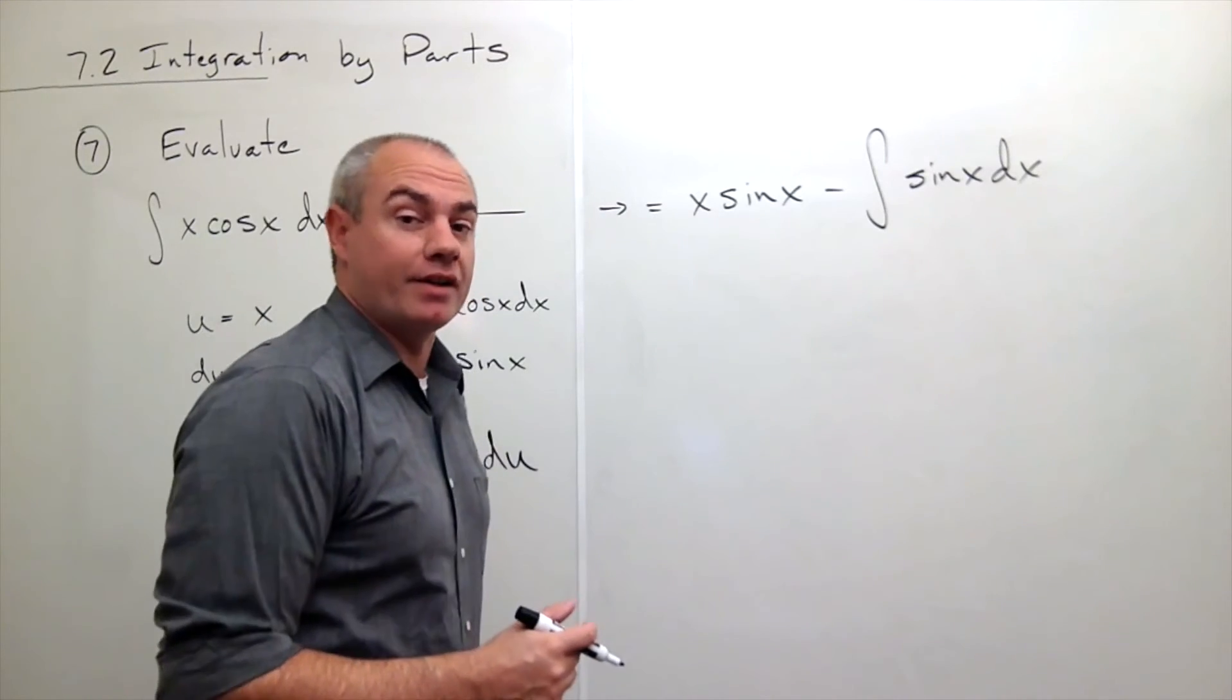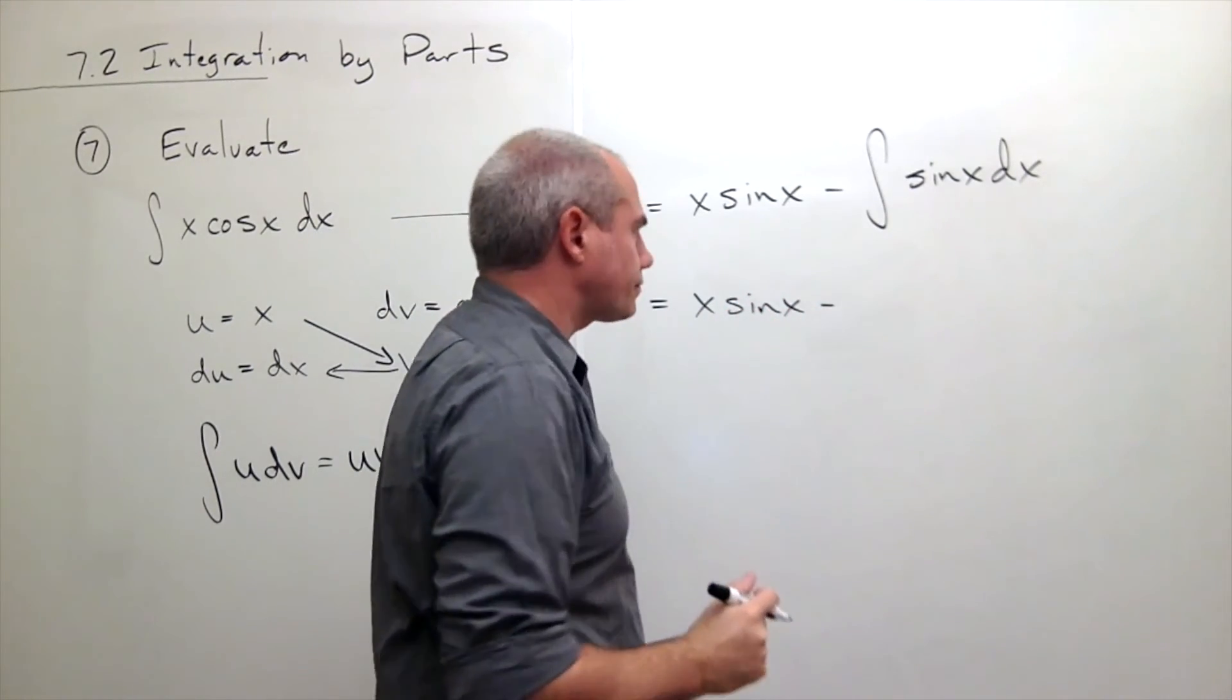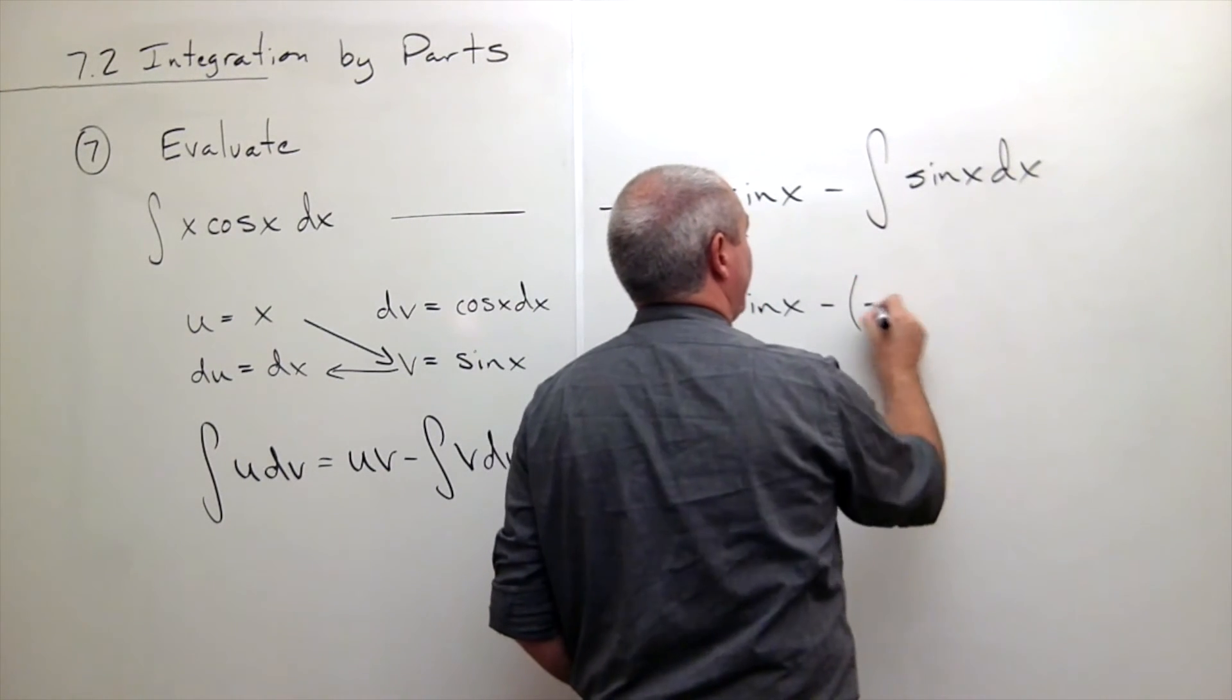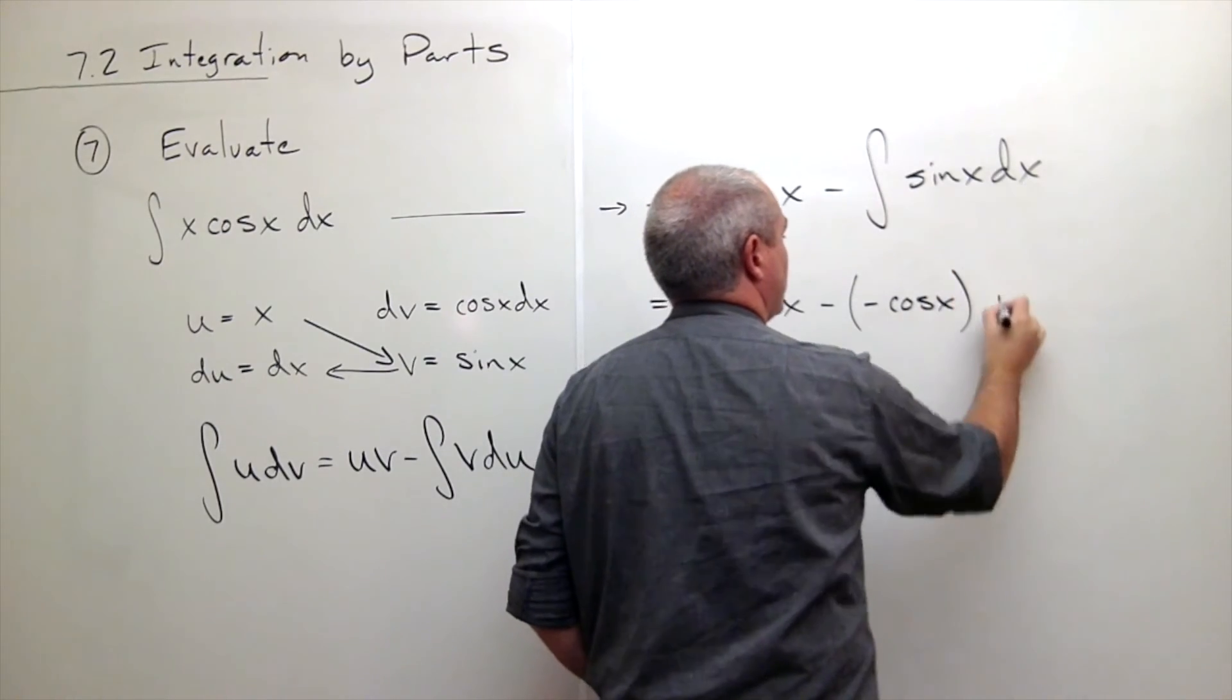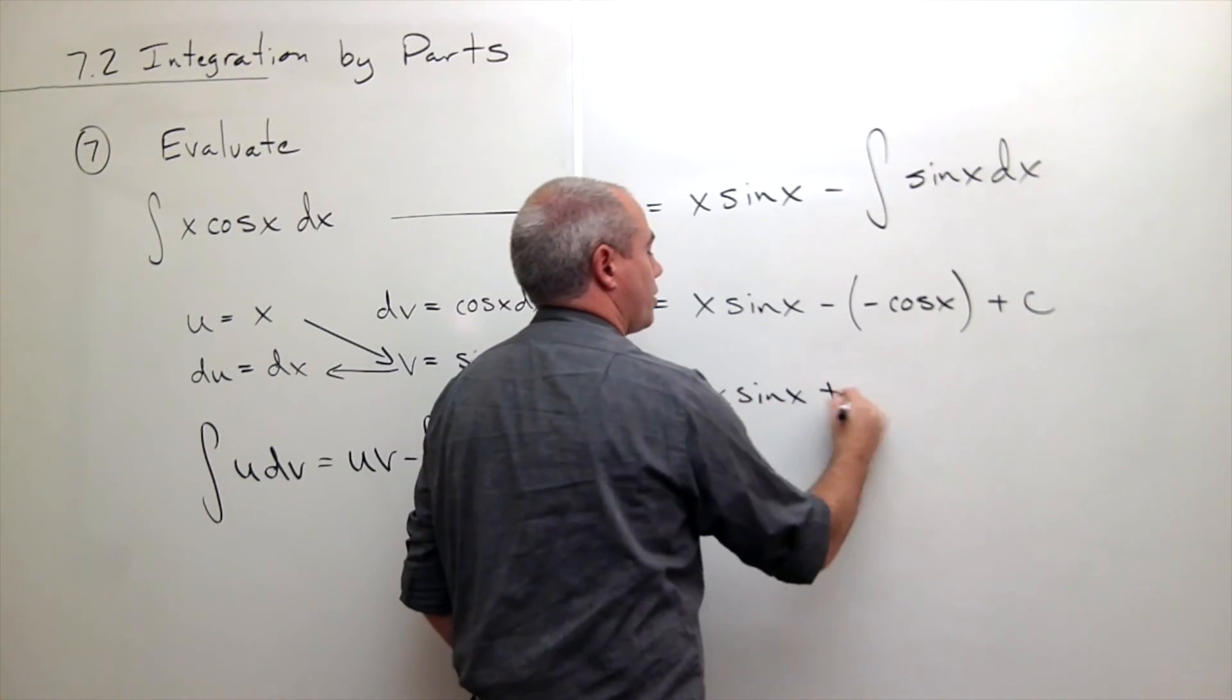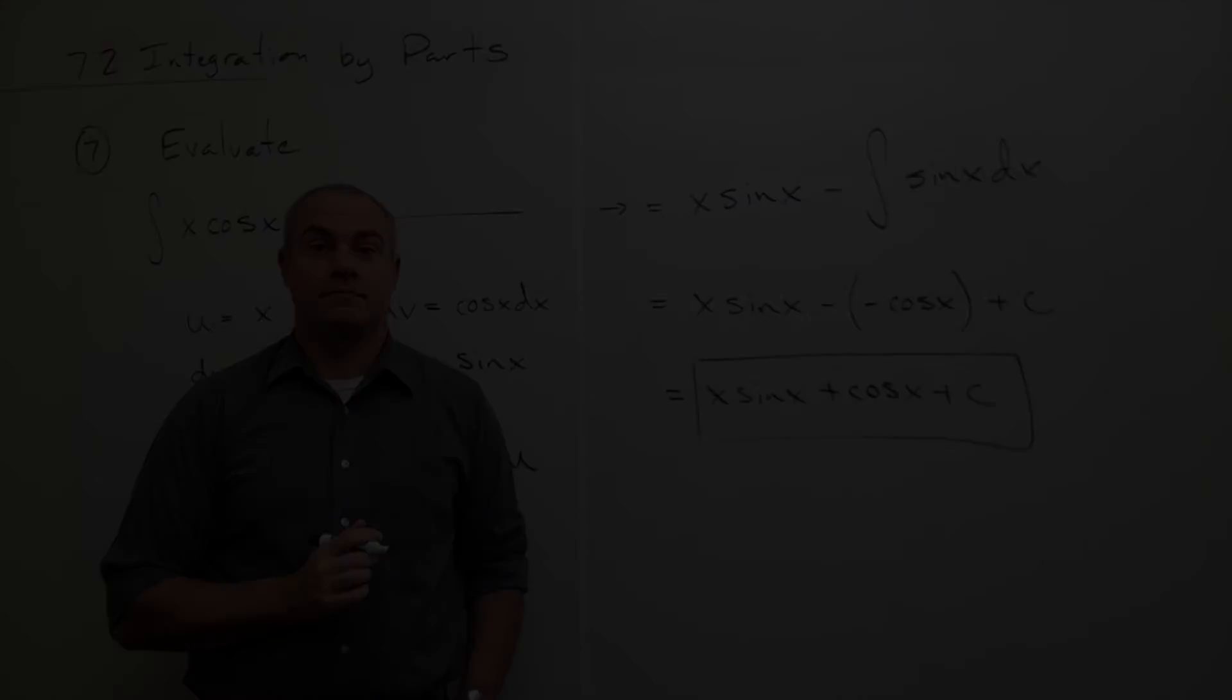So let's do it and find our antiderivative. So we've got that this is equal to x sine x minus the antiderivative of sine of x. And the antiderivative of sine of x is negative cosine of x plus a constant. And of course the negatives here cancel. So I just get x sine x plus cosine x plus C. And we have our antiderivative.